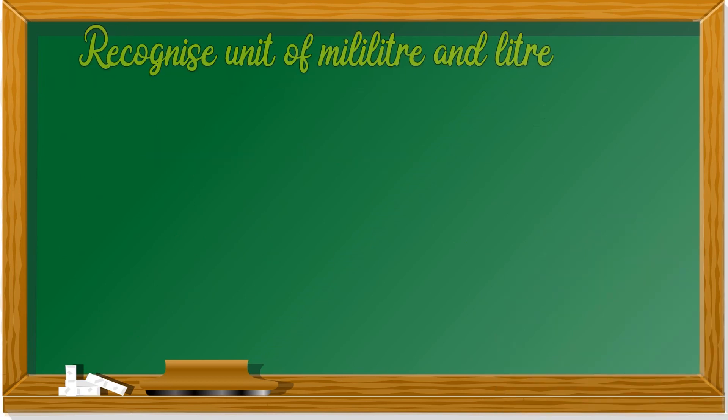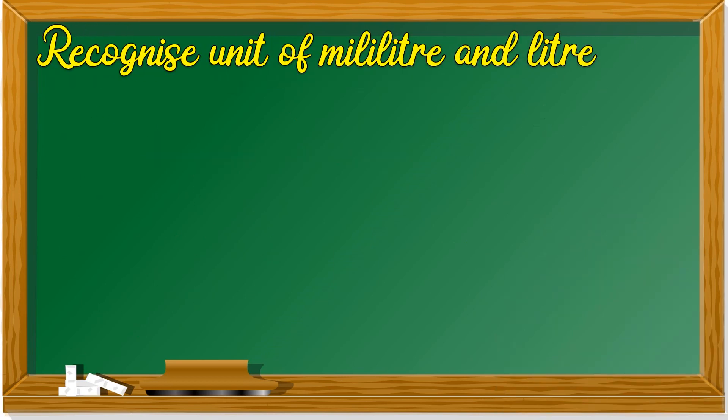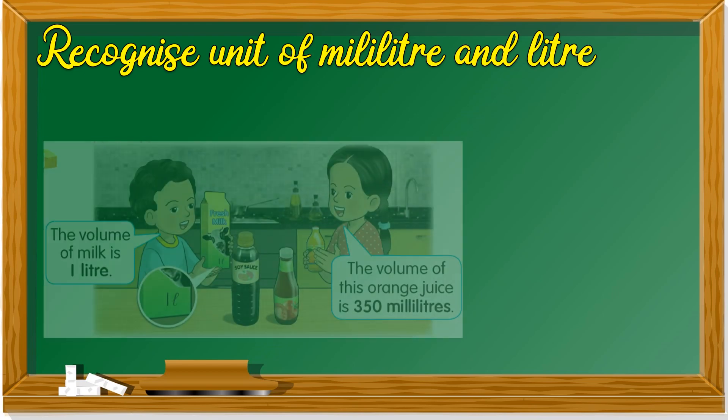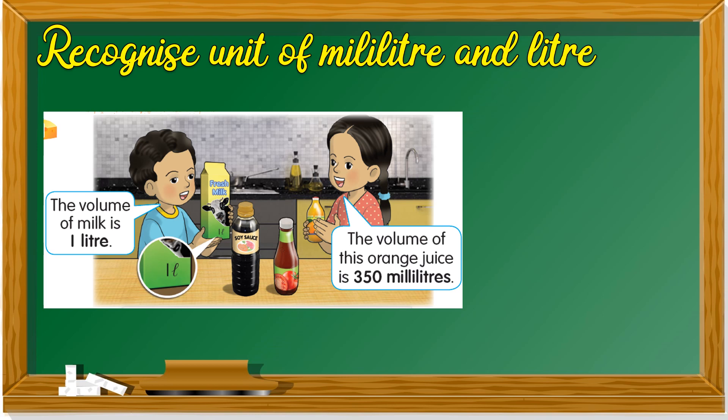Let's recognize the unit of milliliter and liter. The volume of milk is 1 liter. You always see this on bottles or drinks. And the volume of this orange juice is 350 milliliters.